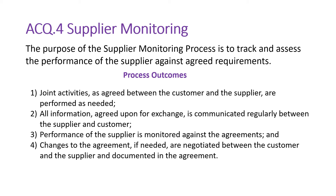The process outcomes are: joint activities as agreed between the customer and the supplier are performed as needed. These joint activities may be your joint reviews or your status reporting activities to the customer. All information agreed upon for exchange is communicated regularly between the supplier and the customer. If you have a supplier, you will get the status report and all information communicated. If you are a supplier to the customer, then you need to give the information which is needed by the customer.